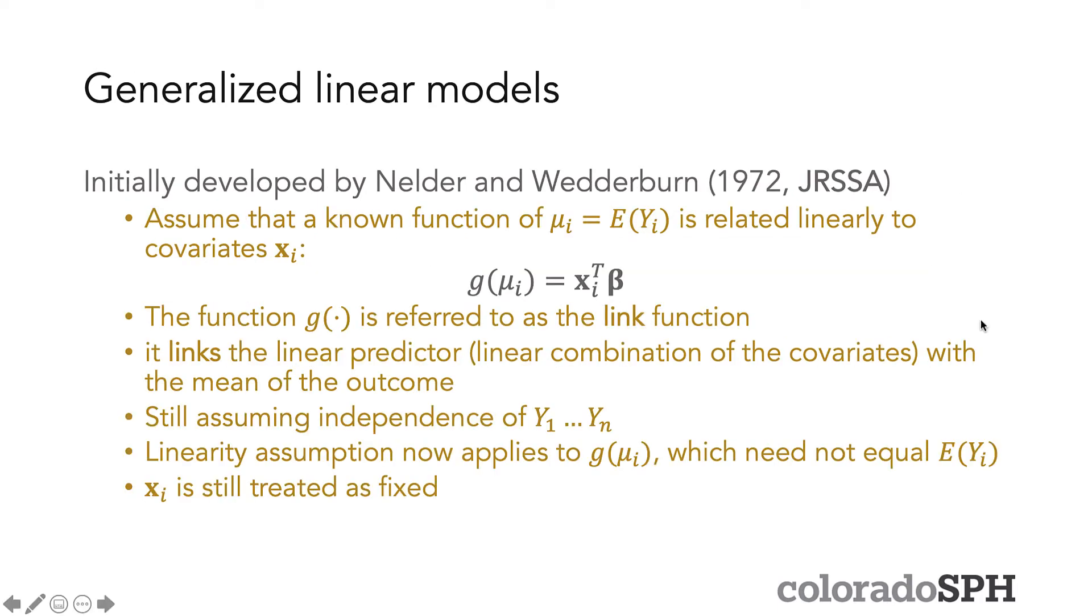So generalized linear models were initially developed by Nelder and Wedderburn in 1972. And with GLMs you assume that a known function of mu_i equals expectation Y_i is related linearly to those covariates X_i. And that's what this equation is saying.